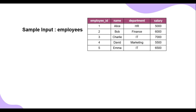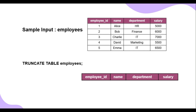Now let's move on to the TRUNCATE command. The TRUNCATE command is used to delete all rows from a table quickly without logging each row deletion individually, making it faster than DELETE. Unlike DELETE, it cannot use a WHERE condition and it resets auto-increment counters. The syntax is: TRUNCATE TABLE employees. The result is that all rows in the employees table are deleted, the table structure remains intact, and the auto-increment counter for employee ID is reset to start from one.